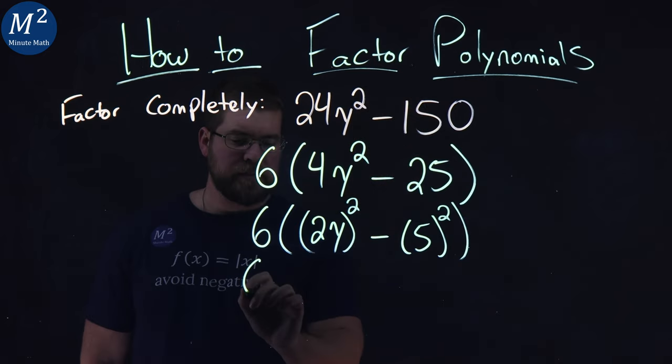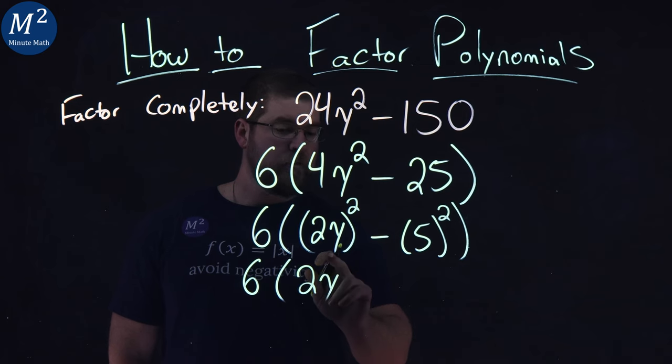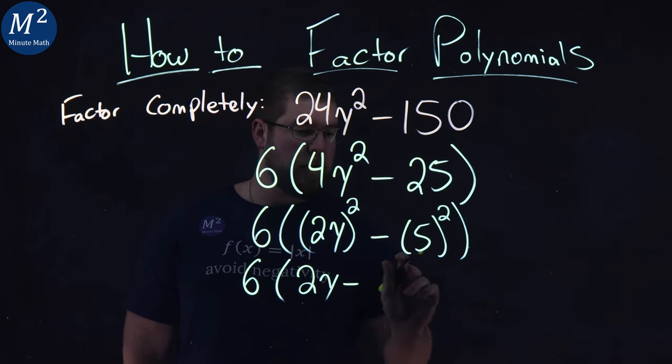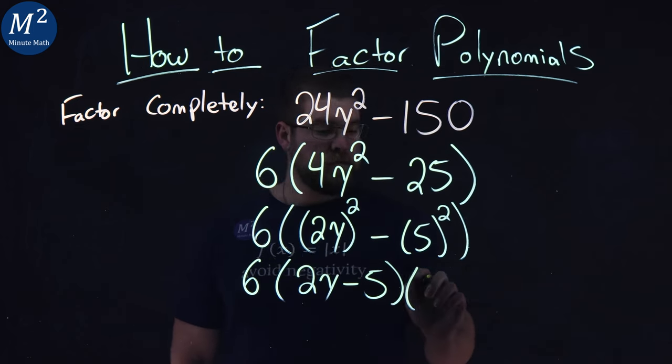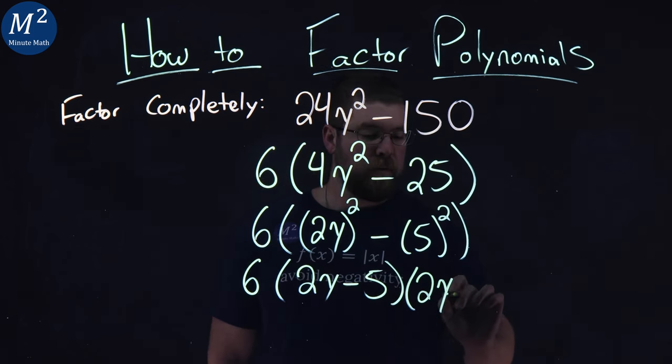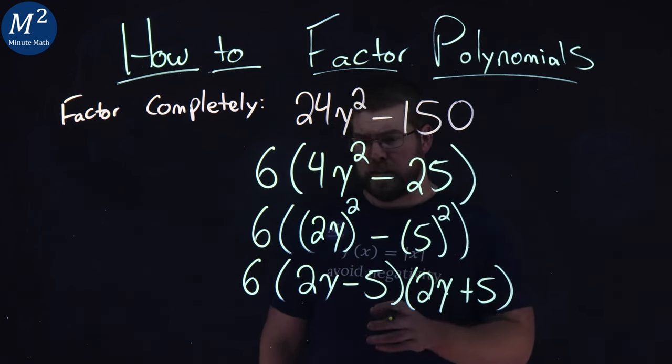This actually comes out to be, let's leave a 6 out here, and we can write this as 2y, our first value, minus the second value, 5, multiplied by first value, 2y, plus 5.